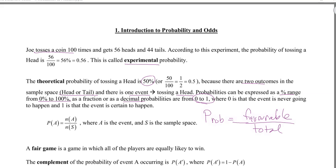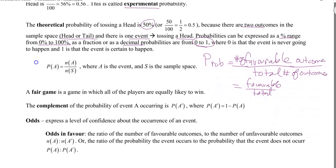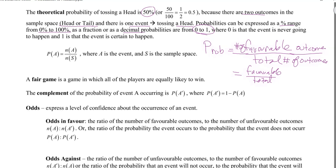I'll often define probability as favorable over total — the number of favorable outcomes over the total number of outcomes. Favorable isn't good or bad; favorable is simply the thing we want to happen. A fair game is a game in which all of the players are equally likely to win, so everybody has the same chance of winning.